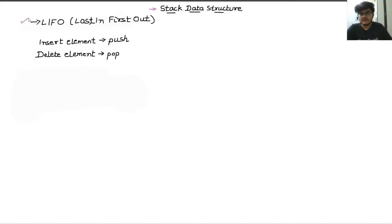The first property that the stack data structure defines is the LIFO property, which is the last in first out property — it defines the structure of the data. Last in first out means that the last element that goes inside the stack is going to be the first element to come out of the data structure.